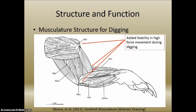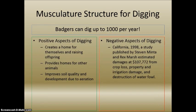Some of the unique structure and functions of the badger's make-up: one particular thing is musculature structure used for digging. From an abstract drawing from a profile done on the American Badger, the muscle groups are very broad and wrap around most of the joint compounds in the body. The forelimb musculature provides added stability and high force movement during digging, as badgers are often known for their scratch-digging capabilities. Badgers can dig up to a thousand holes per year. This creates homes for themselves and their offspring and provides homes for other animals once the badger moves on, and is known to improve soil quality and development through aeration.